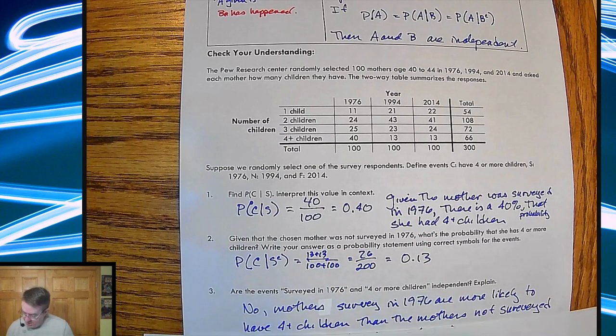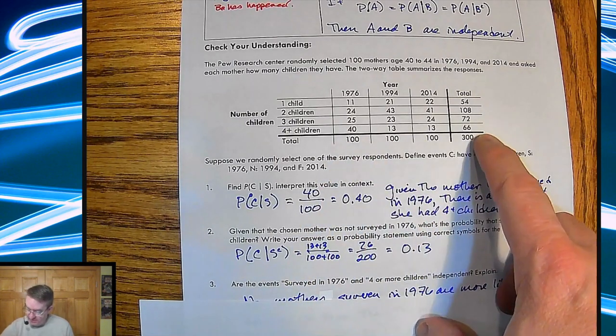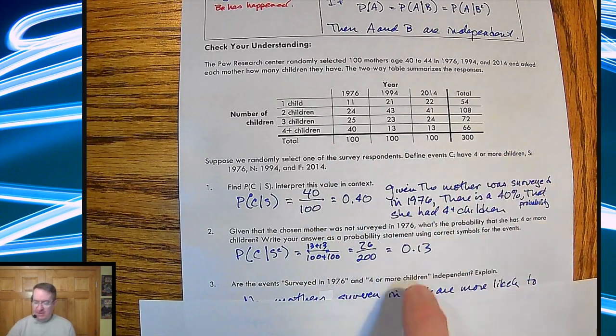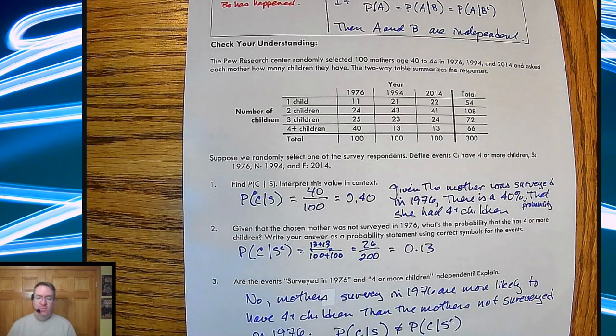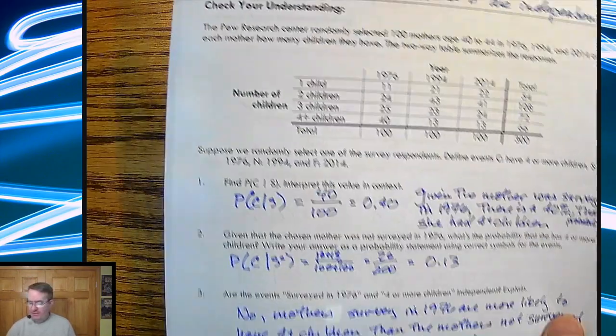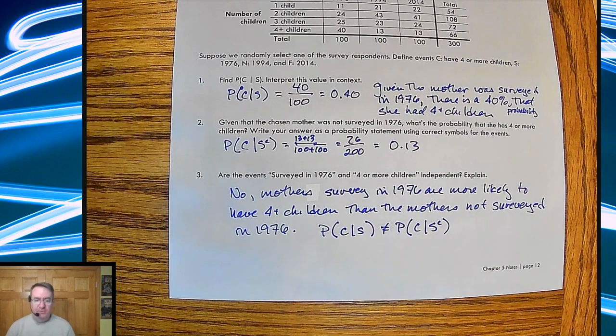Anyway, moving on. So are these two events independent? We automatically know. We don't even have to check to see what the 66 out of 300 is, because these two numbers are already off. And if two sets of numbers are off, that's more than enough to disprove what's going on. So, no, the mothers in the survey in 1976 are more likely to have four-plus children than the mothers not surveyed in 1976. So therefore, they're not independent.